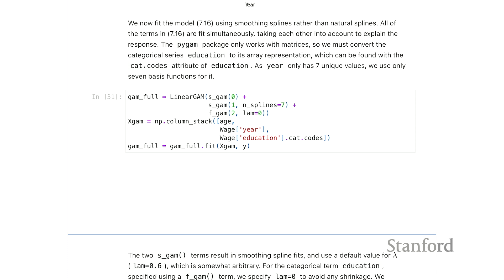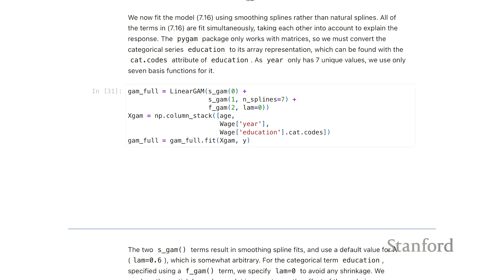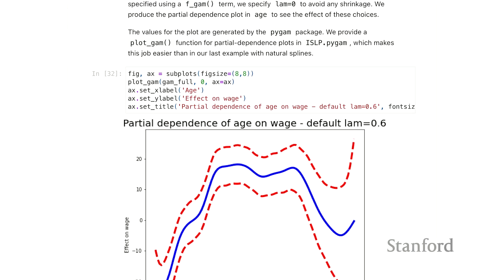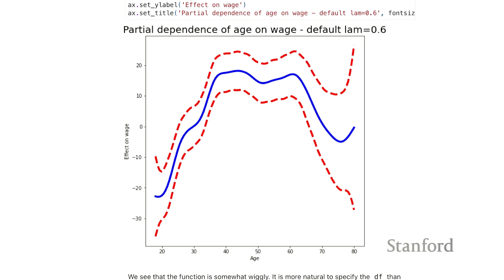I just wanted to point out that unlike the model spec, the GAM function doesn't use variable names in specifying it. But it's fit using a fit method. And we've written a function in the ISLP package to make these partial dependence plots for the fitted model. So I'm just showing you here the partial dependence plots for age on wage when we don't specify any parameters to the S_GAM function. So this indicates we'll of course want to tune this. So lambda equals 0.06 is not very smooth compared to the other one.